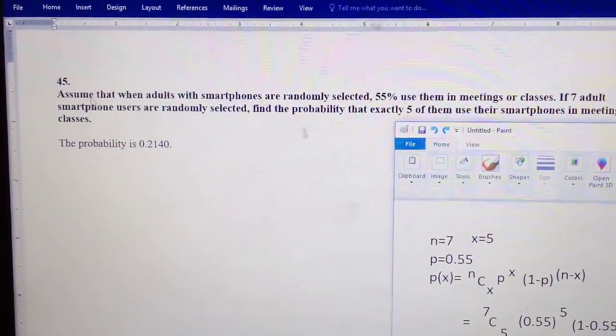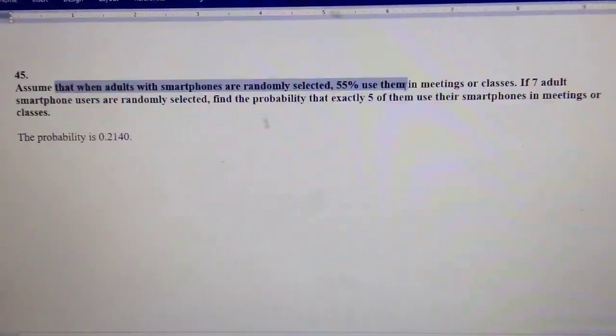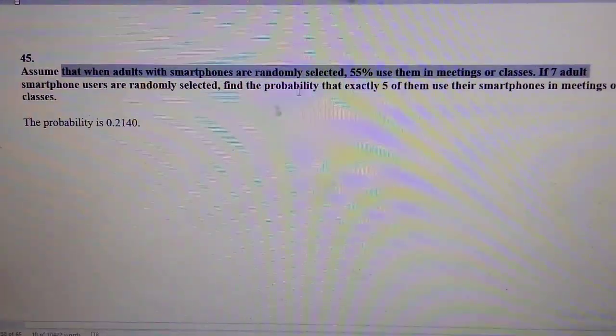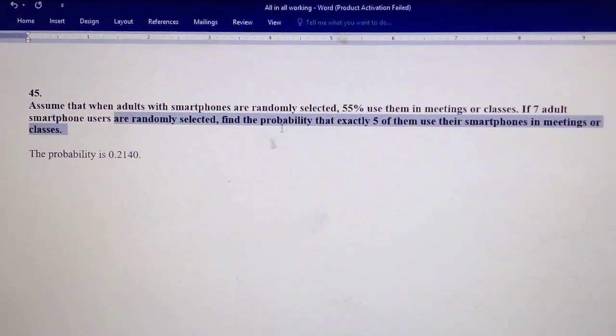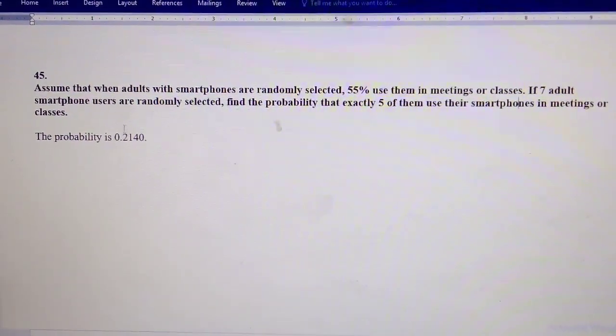Assume that when adults with smartphones are randomly selected, 55% use them in meetings or classes. If 7 adult smartphone users are randomly selected, find the probability that exactly 5 of them use their smartphones in meetings or classes.